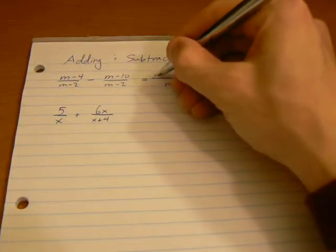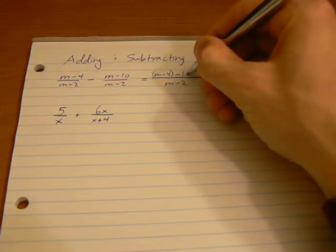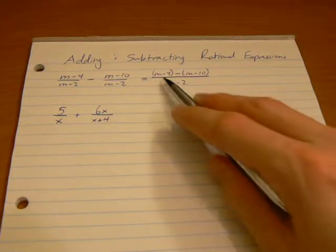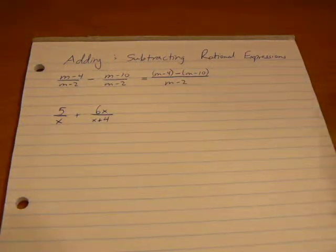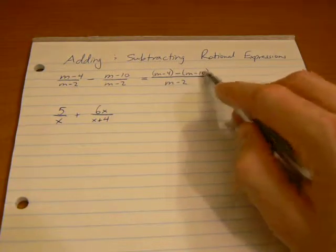So our denominator carries straight across and we just work right across the top. m-4, I'm going to write this in brackets here, minus, subtracting m-10. Now that we've got this over our common denominator, all we have to work with now is the numerator and we're left with basically a problem that is addition or subtraction of polynomials: m-4 minus m-10.